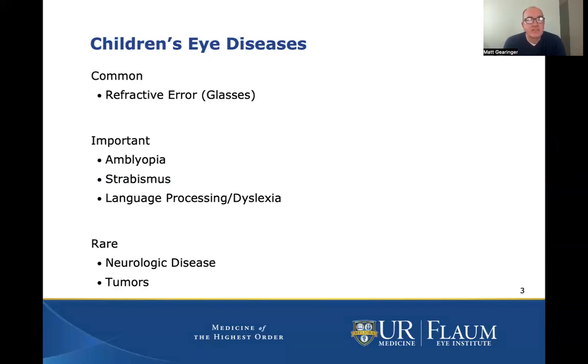We're going to go through a number of children's eye diseases here. Some are common, like refractive error, which is a need for glasses for blurred vision. There are a number of important ones, like amblyopia or lazy eye, and strabismus, which is misaligned eyes.